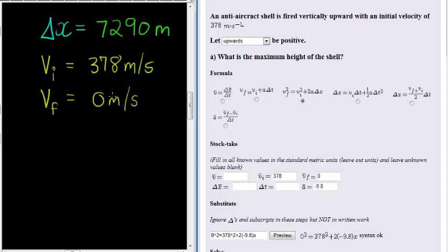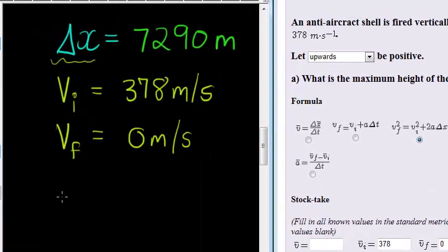Why do we say it's 0 meters per second? Because we are talking about the maximum height. At the maximum height, the initial or the final velocity is always 0.